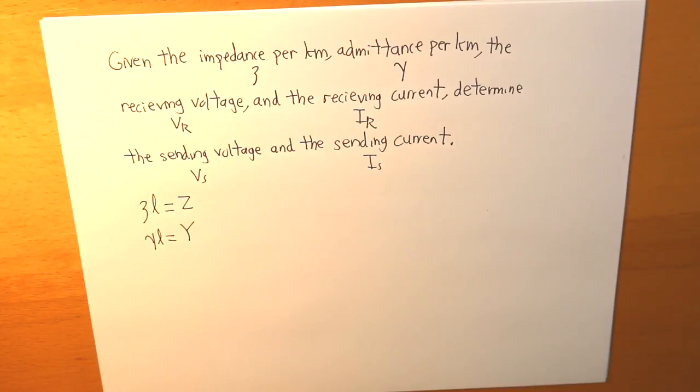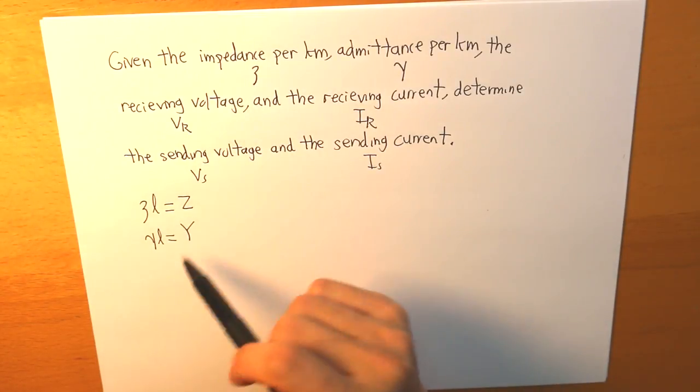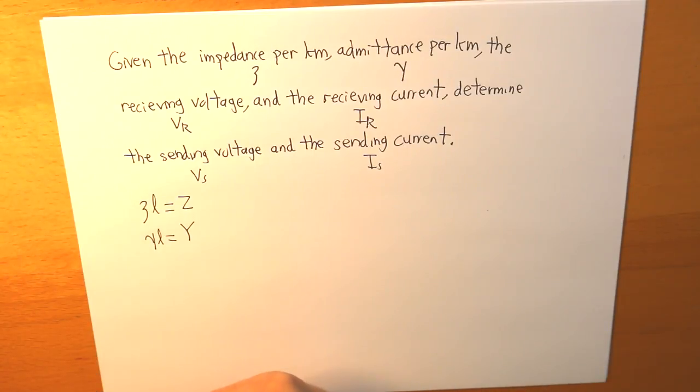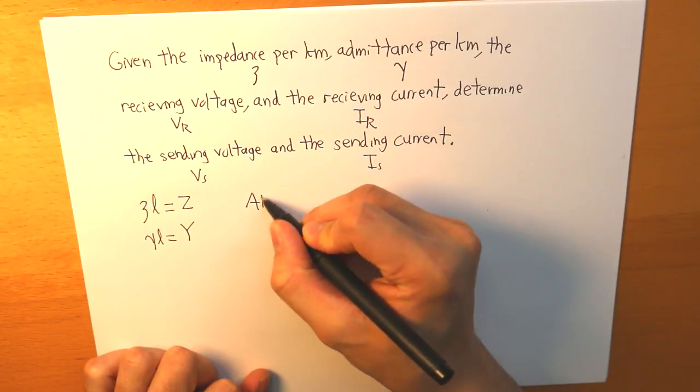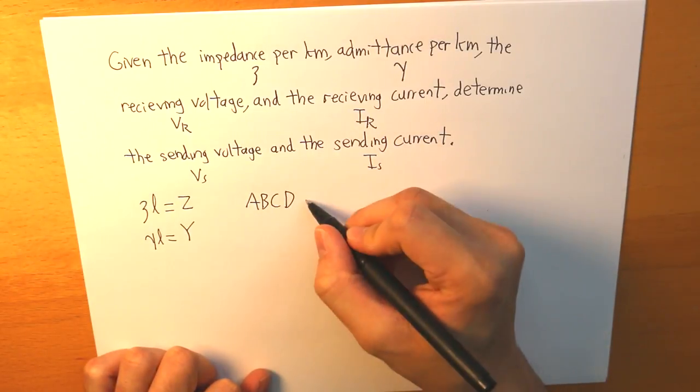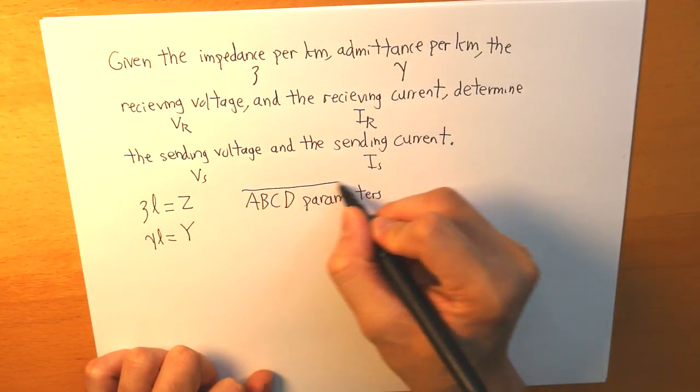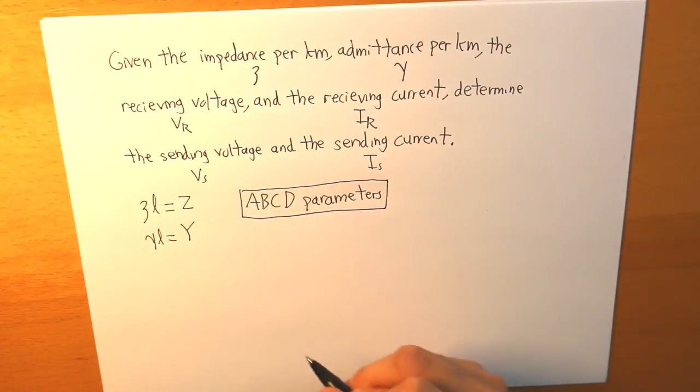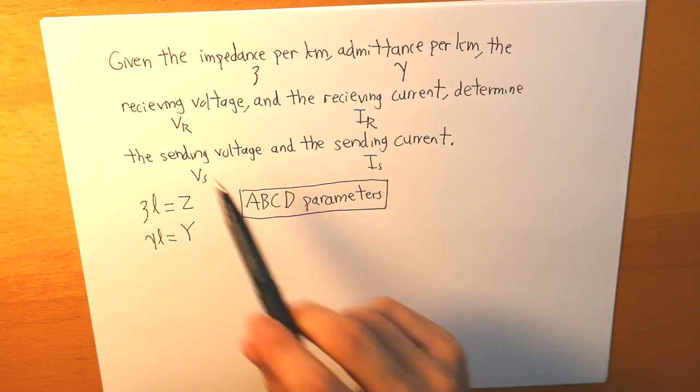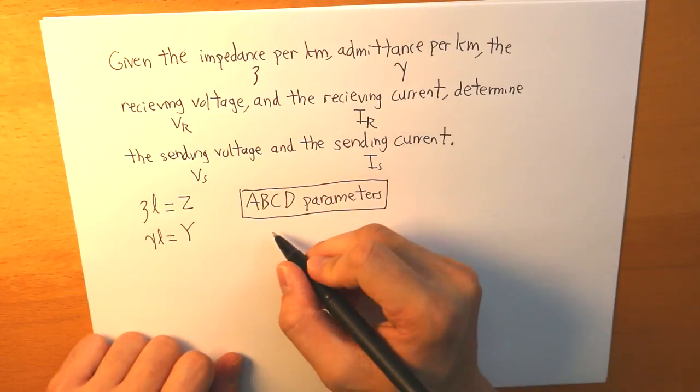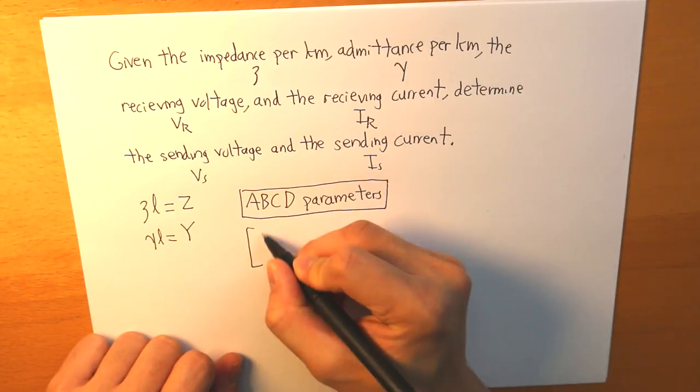This is how it is, our values. Now we got that, what we simply apply is the ABCD parameters. So, this is what we're supposed to apply. This concept right here. And this concept is simply taking VR and IR and we will get our values for VS and IS.